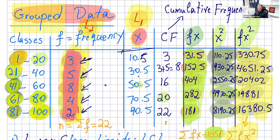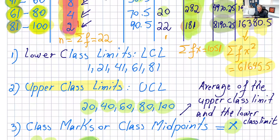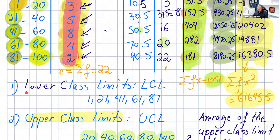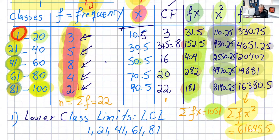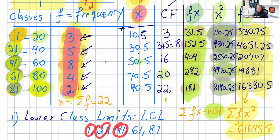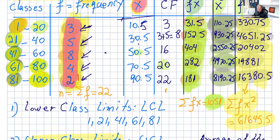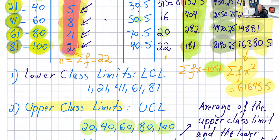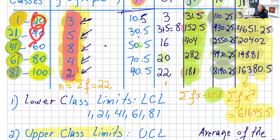Now, there are some definitions with this type of data. First are the lower class limits — these are 1, 21, 41, 61, and 81. Then, of course, the upper class limits are 20, 40, 60, 80, and 100.